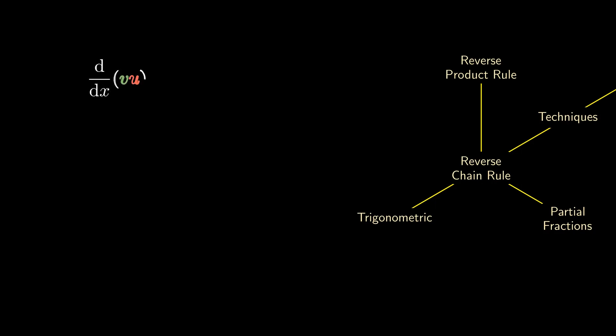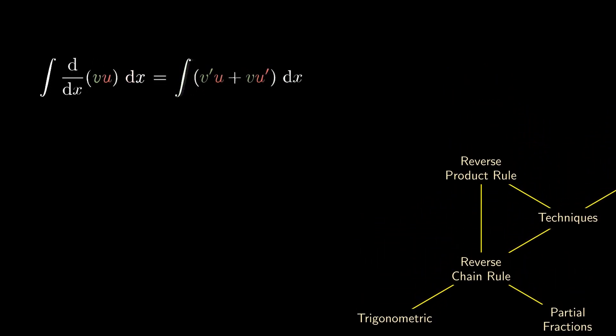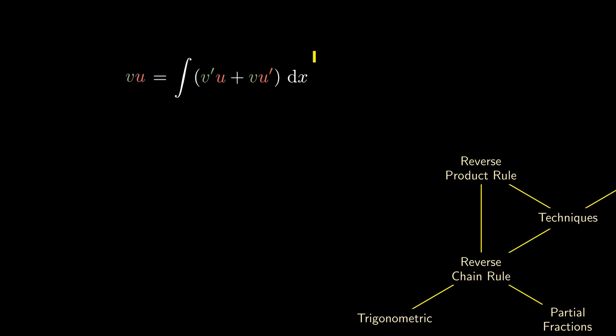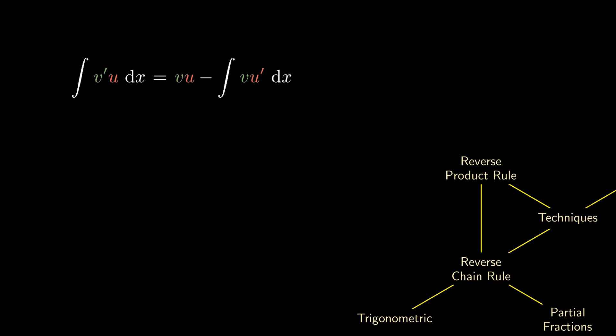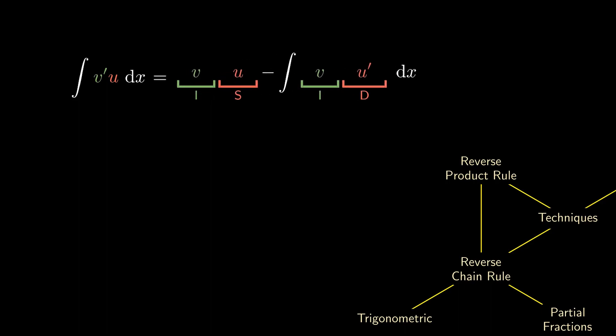If we know how to reverse the chain rule, can we try to reverse the product rule? We can start with the basic product rule in differentiation and integrate on both sides. On the left side, the integral and the derivative cancel out. On the right side, we can split up the integral and isolate the integral of v′u. This is the famous integration by parts formula. Notice two things: first, v′ gets integrated into v; second, u remains the same and gets differentiated. We can abbreviate this using the acronym ISID, which tells us one function gets integrated while another function gets differentiated.